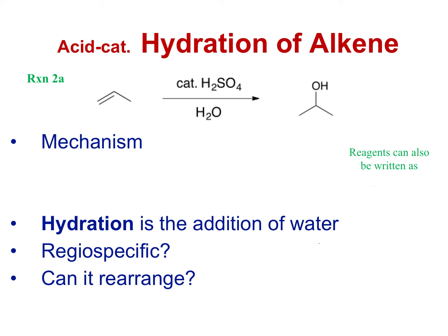One more thing before we get into the details: one way you can write the reaction is with the acid catalyst on top and water as the solvent and nucleophile on the bottom. Some people write it as H3O+ because if you add water and sulfuric acid together, that would be the product. So it's kind of an abbreviation. You could write either version on an exam, but I tend to write it the first way. With that said, let's look at the mechanism, which is going to be very similar to an HX mechanism.